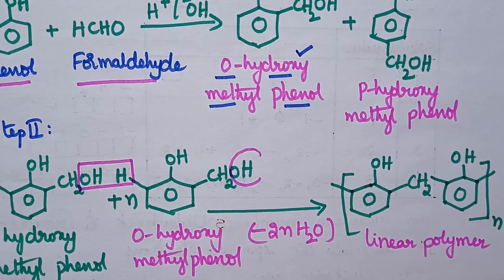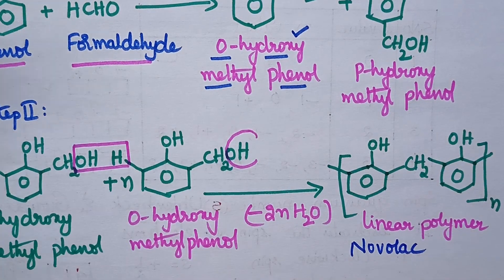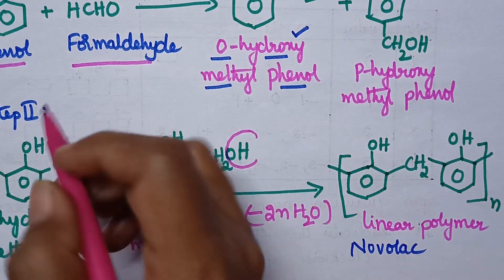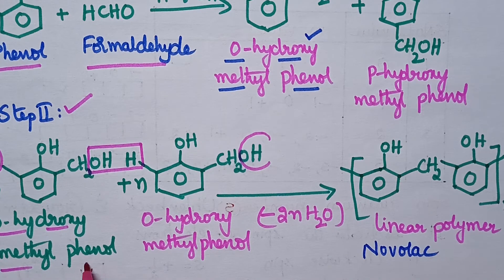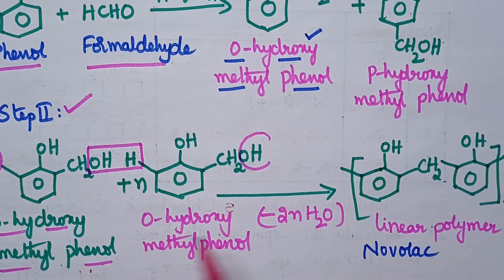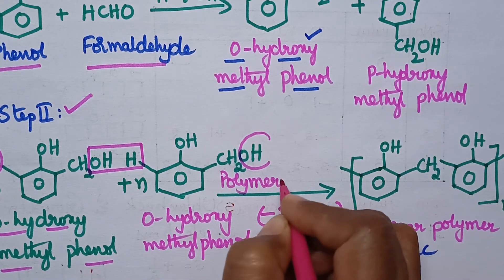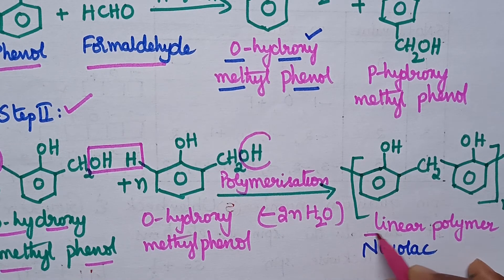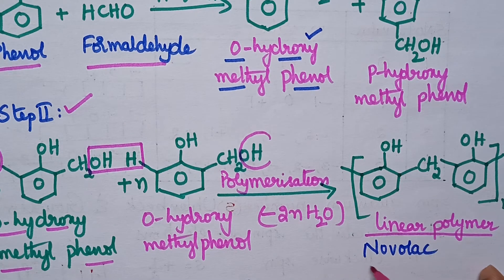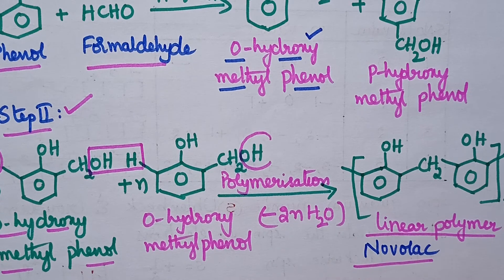This compound is called novolac. In the second step, the ortho-hydroxymethylphenol isomers undergo polymerization, and it results in the formation of a linear polymer called novolac. So in the second step, it exclusively results in the formation of novolac.